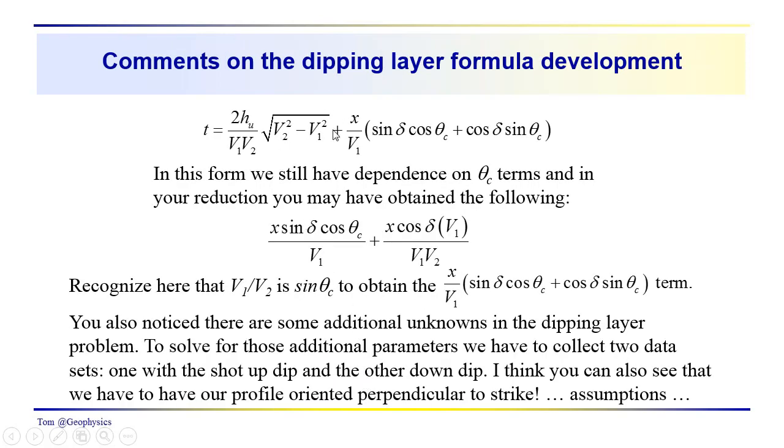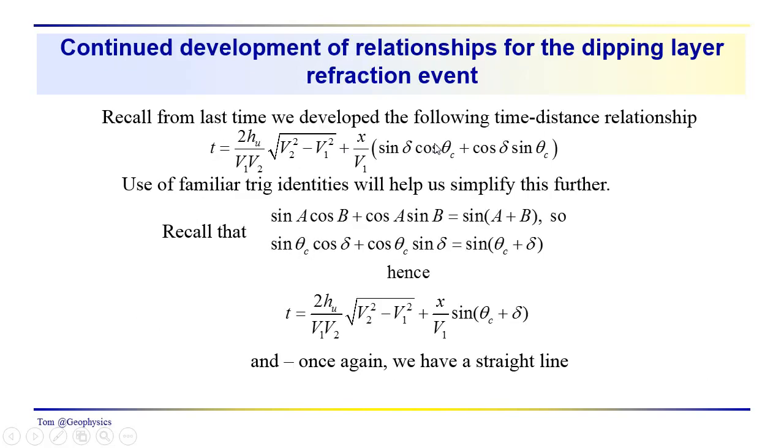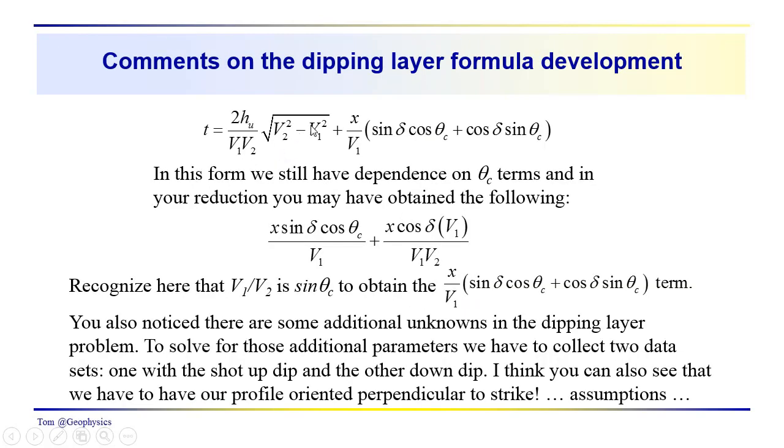So just a few comments in passing as you were developing this expression here. This term, we showed you how to reduce it using trig identities and so on. But something that, as you were going through the development, that you would have needed to notice to get it into this form would be that we realize we have a lot more terms in here. We're left with a lot more unknowns in the dipping layer problem than we did with the horizontal layer problem.